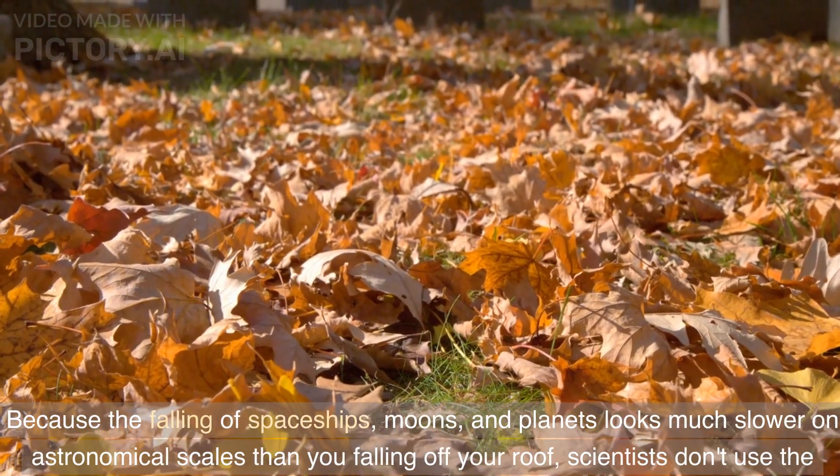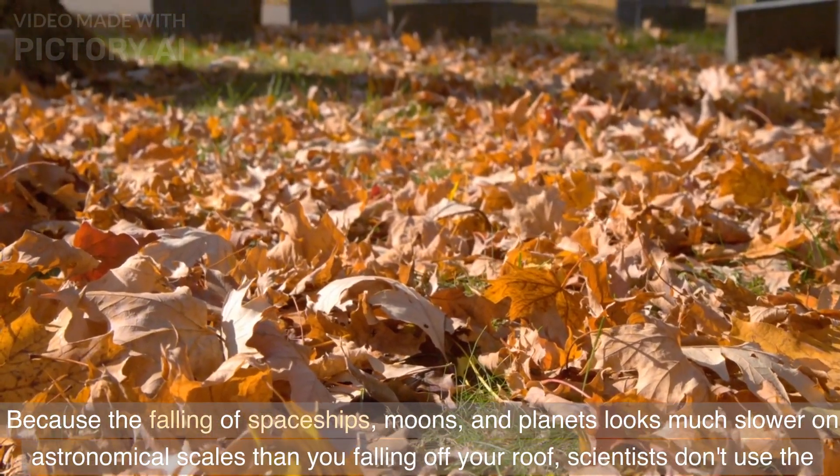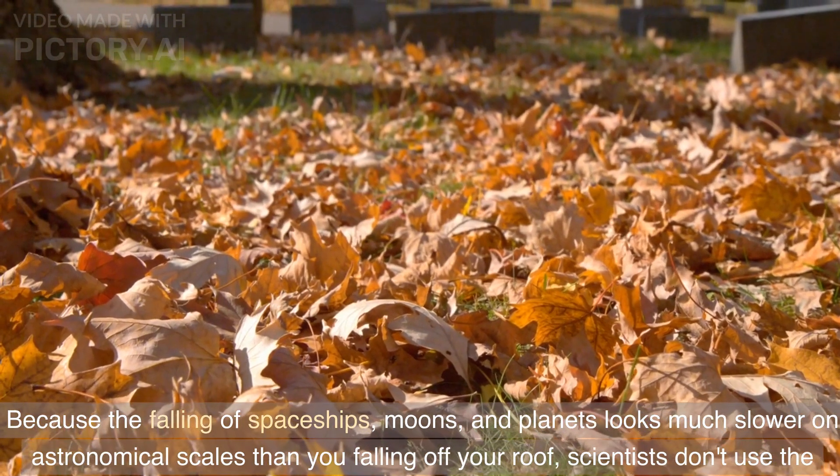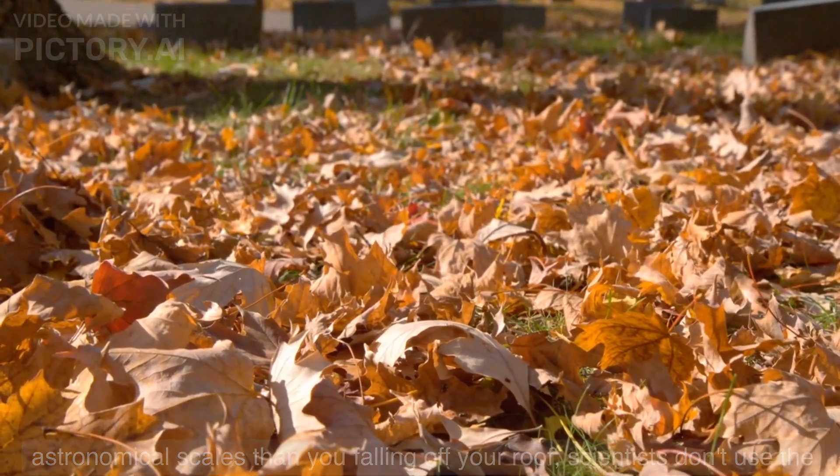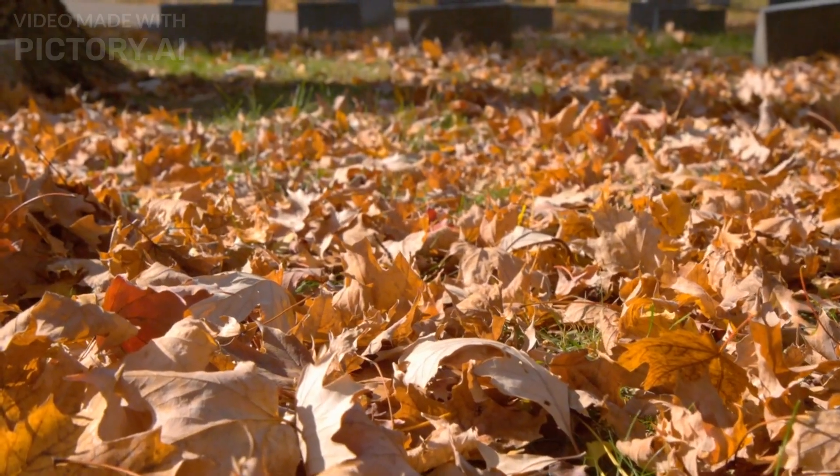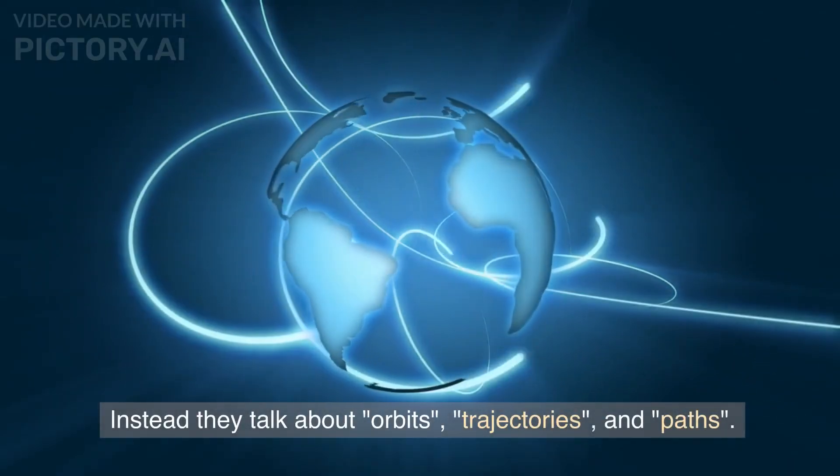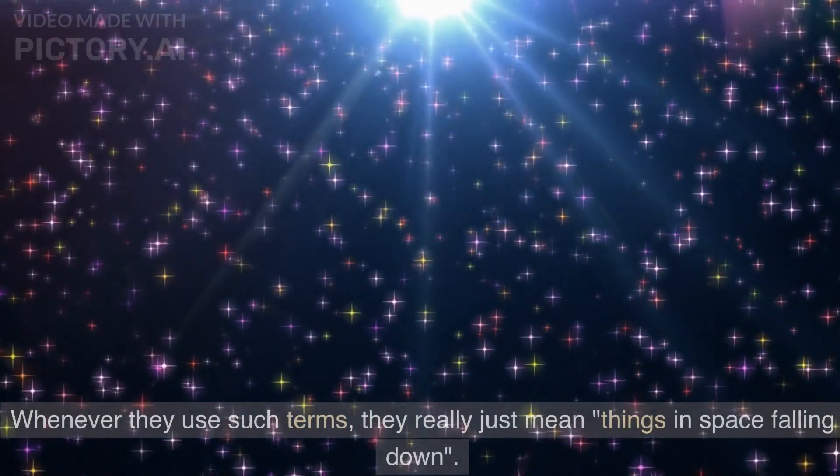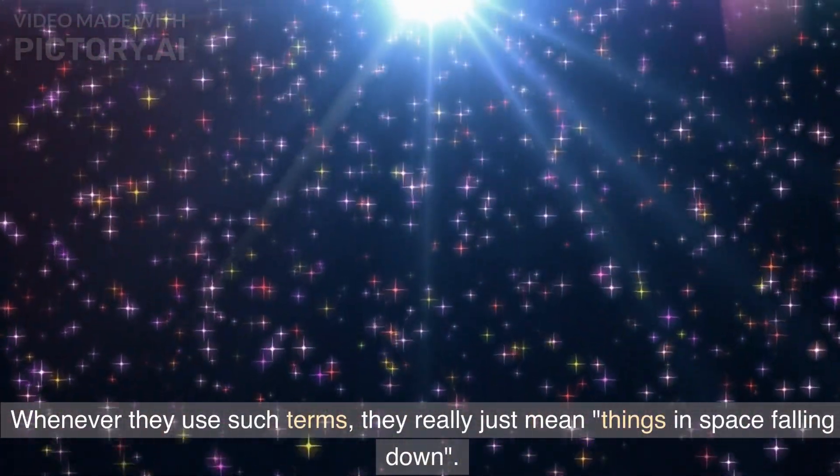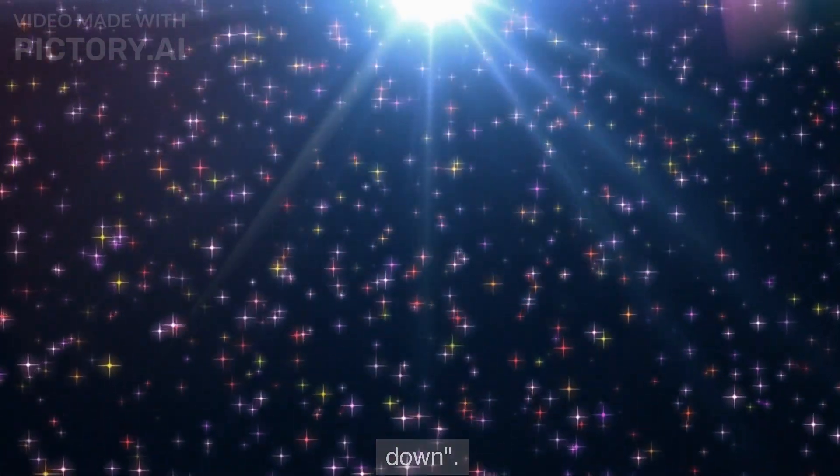But it is definitely there. Because the falling of spaceships, moons, and planets looks much slower on astronomical scales than you falling off your roof, scientists don't use the word falling much. Instead they talk about orbits, trajectories, and paths. Whenever they use such terms, they really just mean things in space falling down.